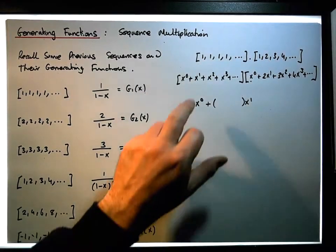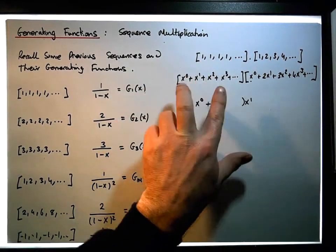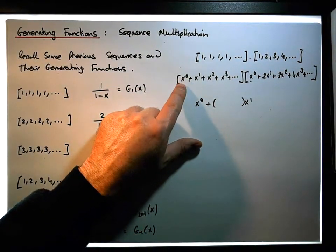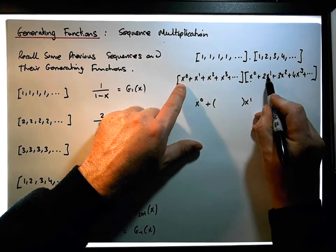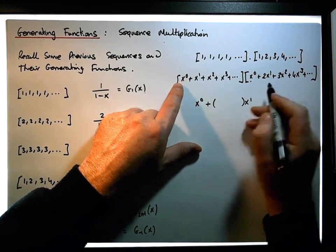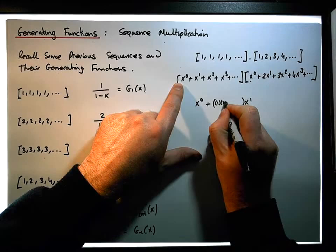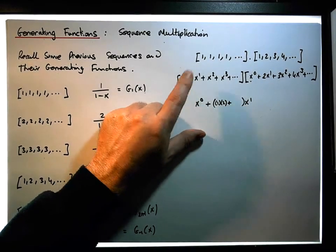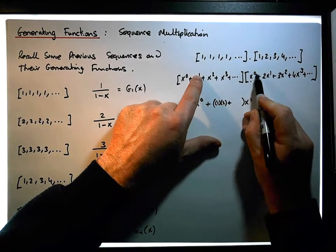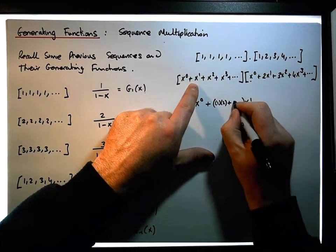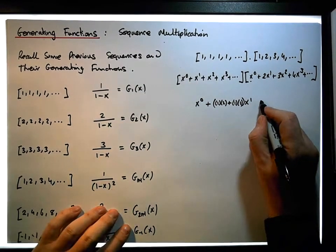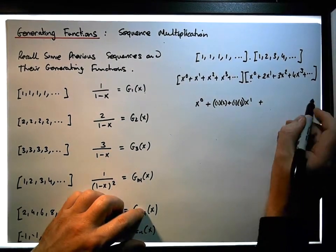The term from the second sequence — but the indexes of the terms have to add to give us one. So it's going to be the coefficient of the x⁰ term times the coefficient of the x¹ term, because zero and one gives us one. That's ones times two, plus the coefficient of the x¹ term times the coefficient of the x⁰ term, because one plus zero gives us one. So that's going to be one times one.